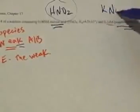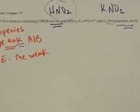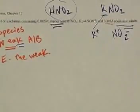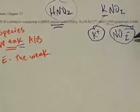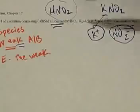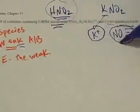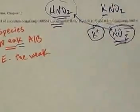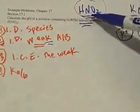The solution also contains potassium nitrite, KNO2. Anything containing potassium is a soluble salt, giving us K+ ions and NO2- ions. Recall from Chapter 16 that NO2- came from a weak acid (HNO2), so it acts a bit basic in solution. Notice that HNO2 and NO2- have the NO2- ion in common — that's our common ion. So we've identified the species and the weak acid, HNO2.